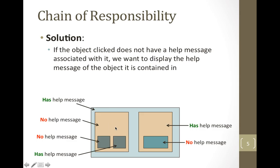If that outer object doesn't have the help message either, then we keep going out until one of the objects has a help message and can complete the request, or we reach the end of any possible object that could complete our request and have to return some kind of error or exception.